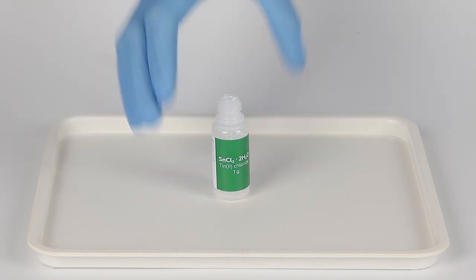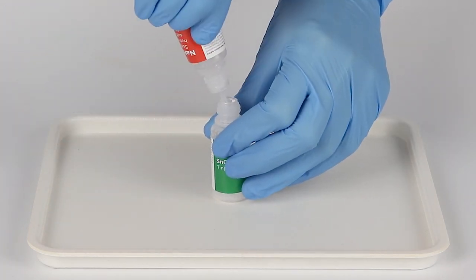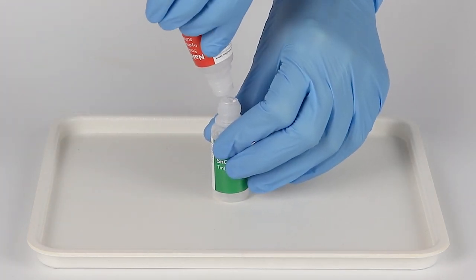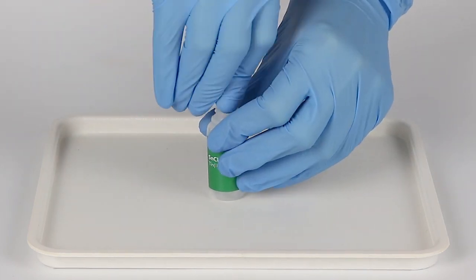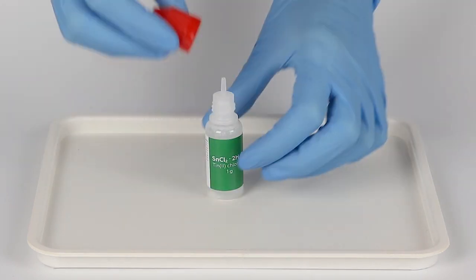Open the bottle of tin chloride and pour one bottle of sodium hydrogen sulfate solution into it. Securely insert the tip and close the bottle using the red cap.